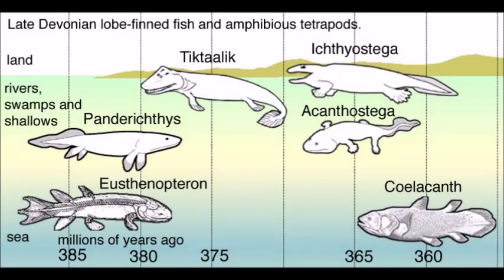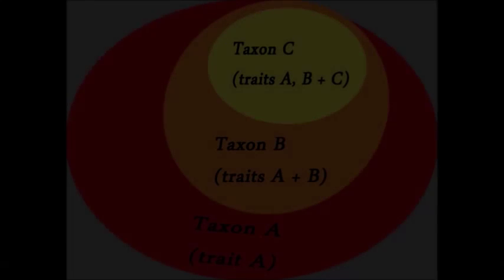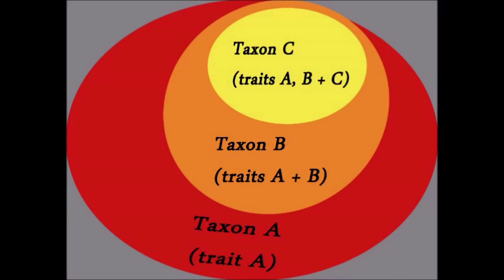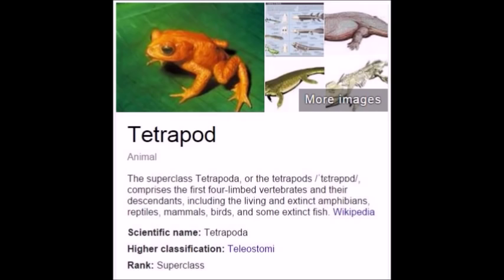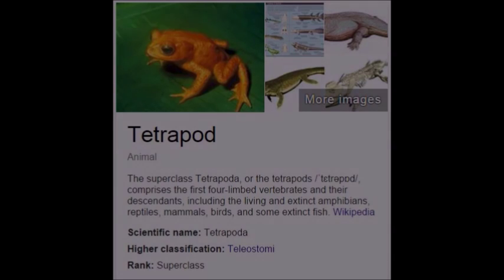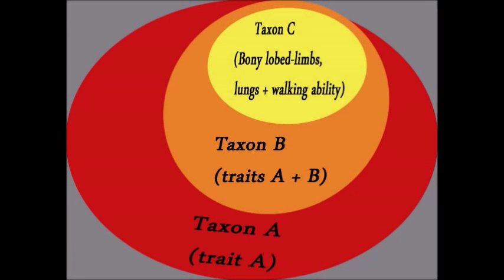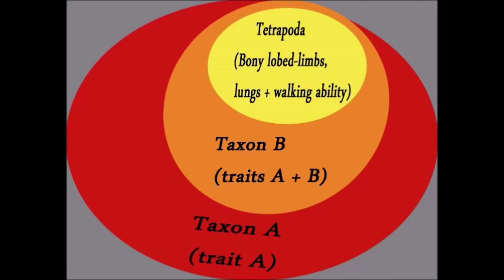Let's run through some examples so you can see how to apply cladistics and find some transitionals yourself to show creationists when they demand some. Suppose we wanted to find out how land tetrapods came about. We can go through the general cladistic definition and replace each variable with creatures that fit the criteria. Tetrapods are chordates with calcified bones that have a lobe-limbed skeleton design, lungs for respiration, and four developed limbs with which they support their own body weight. These features can be our traits A, B, and C respectively, where Tetrapoda is taxon C — represented here by a salamander.